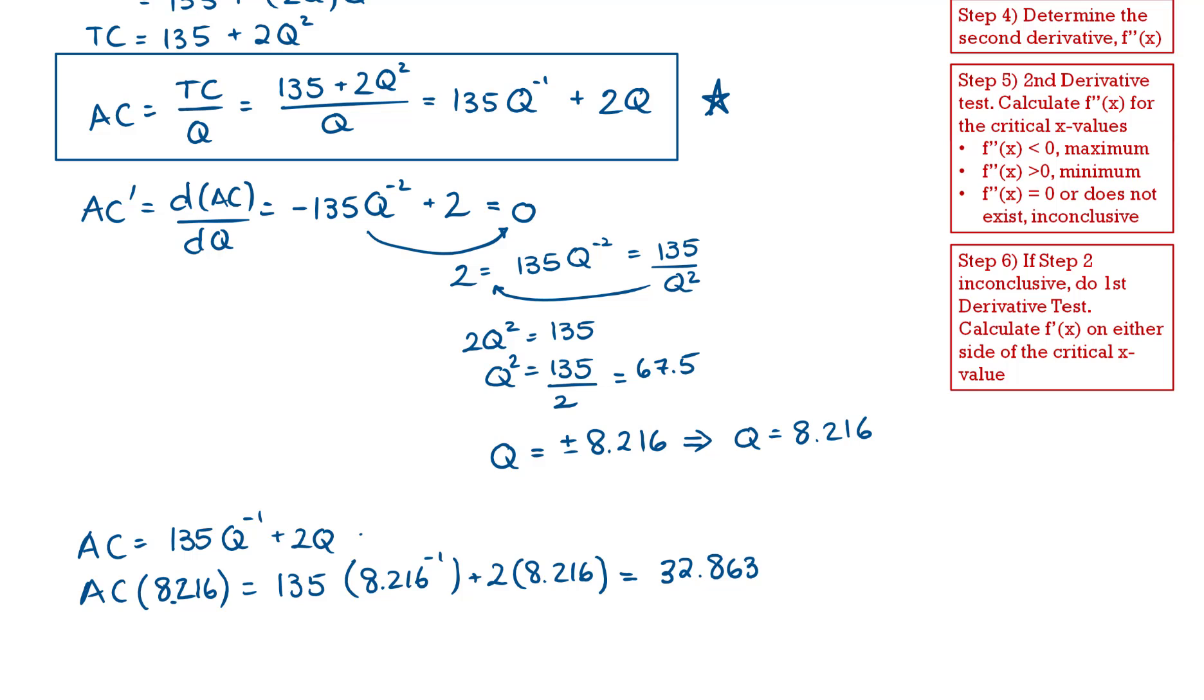Once again, I don't know what the units of cost are. This could be in billions of dollars for all I know. So I'm going to hold on to the decimals. So now I have my critical coordinate. It's when Q is equal to 8.216 and my average cost is equal to 32.863.